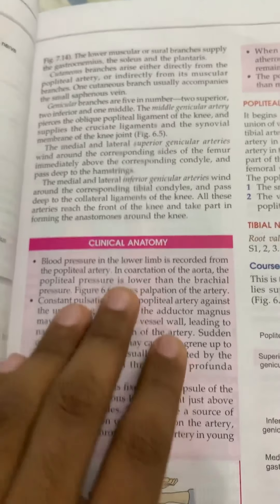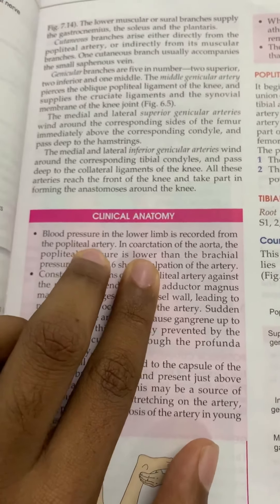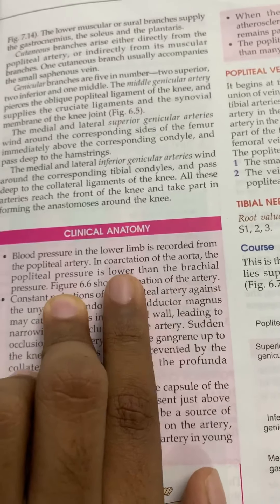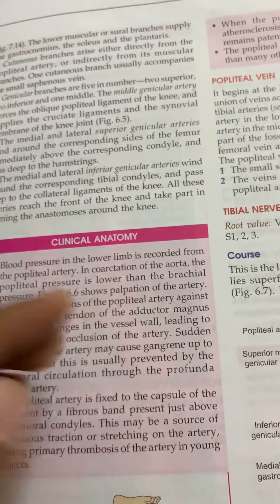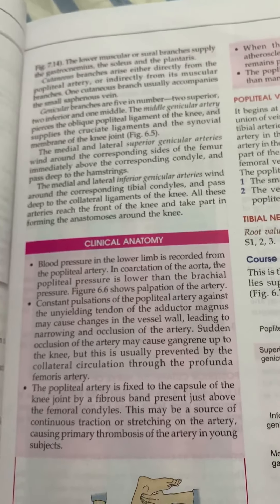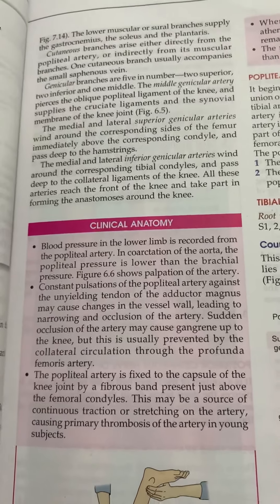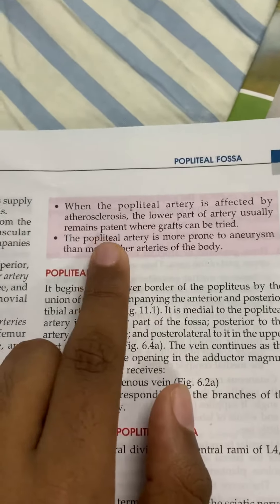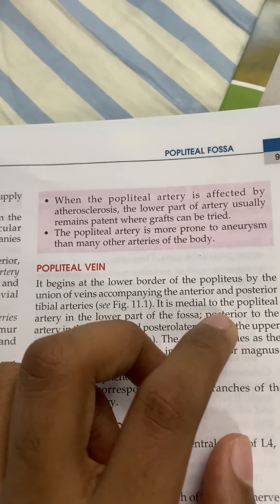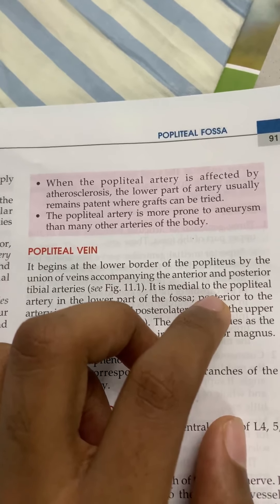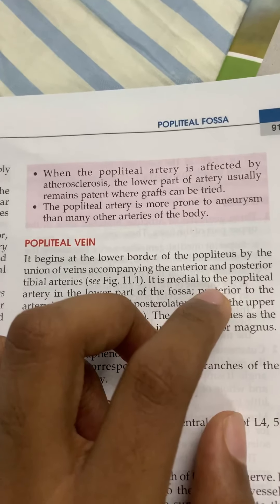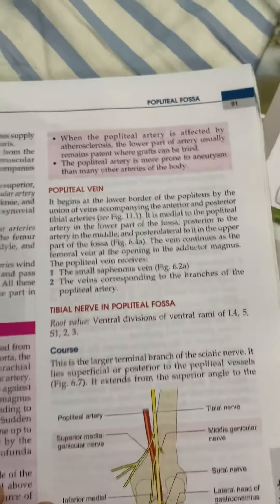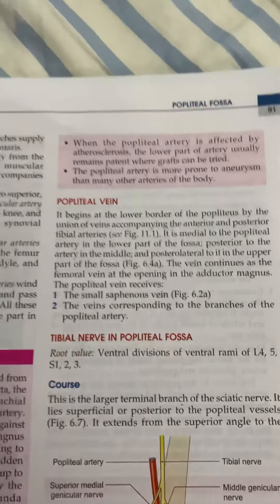For clinical anatomy: we measure blood pressure through the popliteal artery in coarctation of the aorta — there is a lessening of popliteal pressure compared to brachial artery pressure. Also, the popliteal artery is more prone to aneurysm than many other arteries, and the lower part remains patent when most of the artery is affected by atherosclerosis.